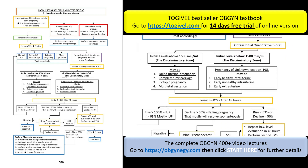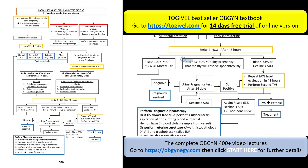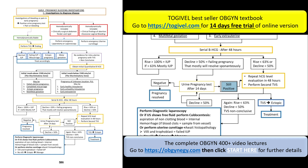If the decline in beta-hCG is more than 50%, this is a failing pregnancy — which can be intrauterine or extrauterine. You must assure that the pregnancy has ended, so perform a urine pregnancy test after 14 days. If it is negative, the pregnancy has resolved. If still positive, the pregnancy did not resolve completely.